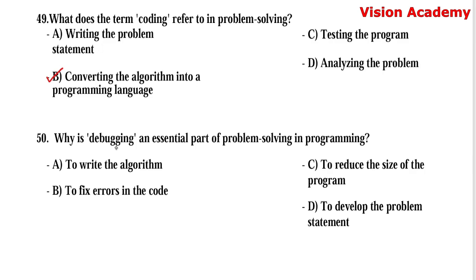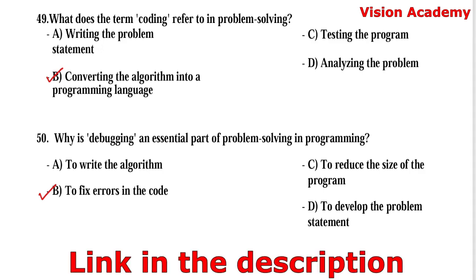Question number 50: Why is debugging an essential part of problem solving in programming? Option A, to write the algorithm. Option B, to fix errors in the code. Option C, to reduce the size of the program. Option D, to develop the problem statement. Here, option B, to fix errors in the code, is the right answer. I hope you understood all of these questions with their answers. If you want to practice and go through all of these questions, the link is given in the description below. Thank you.